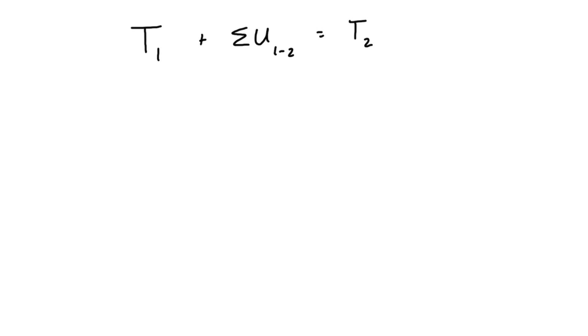the conservation of energy equation, which would include a term for the initial potential energy and the final potential energy. But as long as the potential is not changing, we can just get rid of those and call this the principle of work and energy. You might see it written slightly differently, just rearranged, where we just have the sum